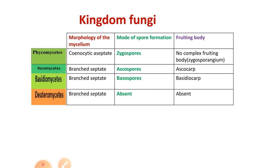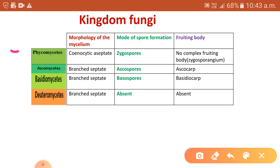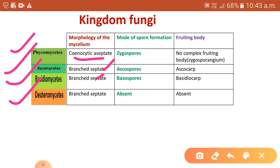Now let's see the different classes in kingdom fungi. On the basis of morphology of the mycelium, mode of spore formation, and fruiting bodies, they are divided into phycomycetes, ascomycetes, basidiomycetes, and deuteromycetes. The first group, phycomycetes, has coenocytic aseptate hyphae — meaning without cross walls — while the other groups have branched septate hyphae. You can see it here. Regarding sexual spores: in phycomycetes they are called zygospores; in ascomycetes, ascospores; in basidiomycetes, basidiospores; and in deuteromycetes, sexual spores are absent.